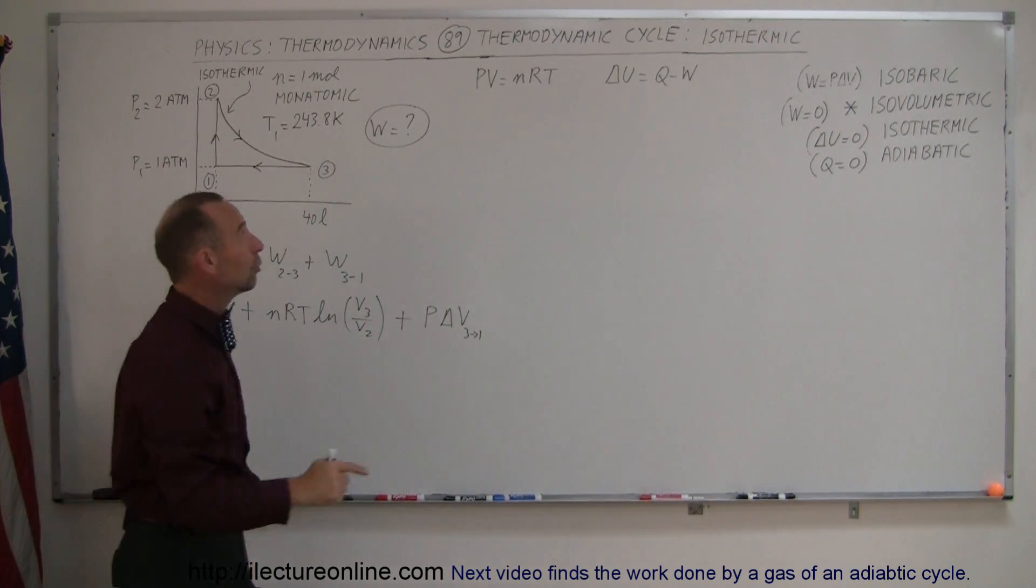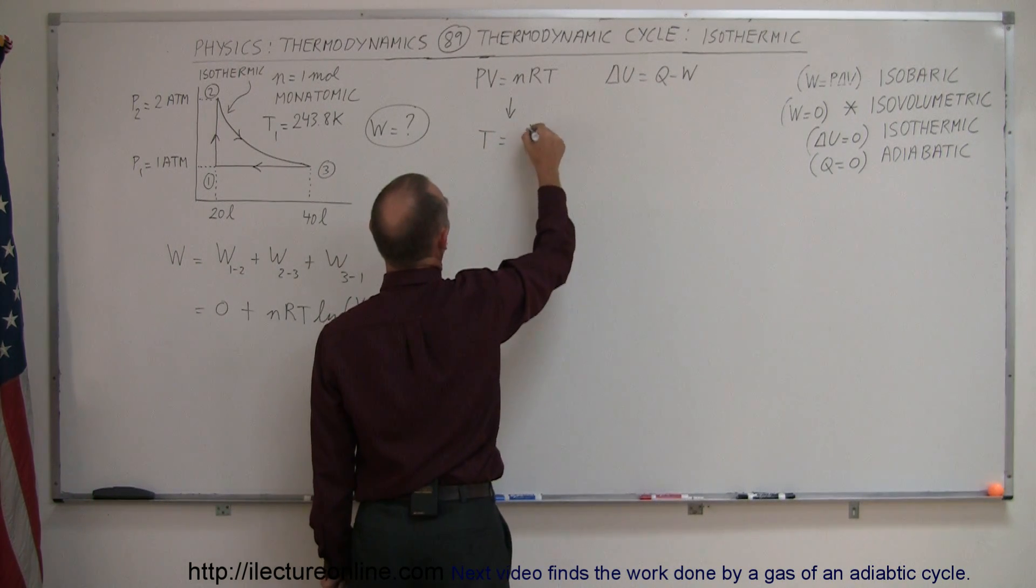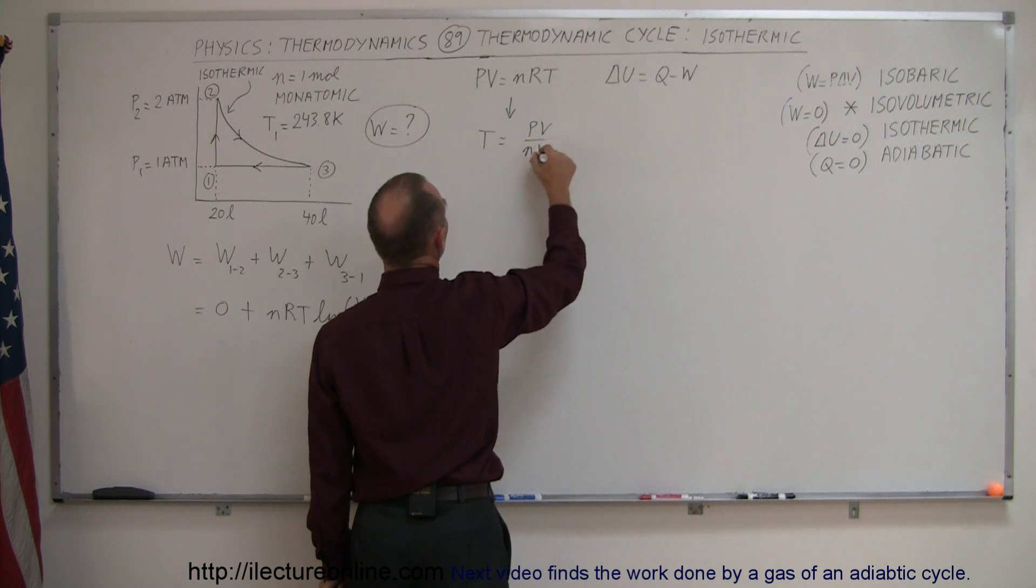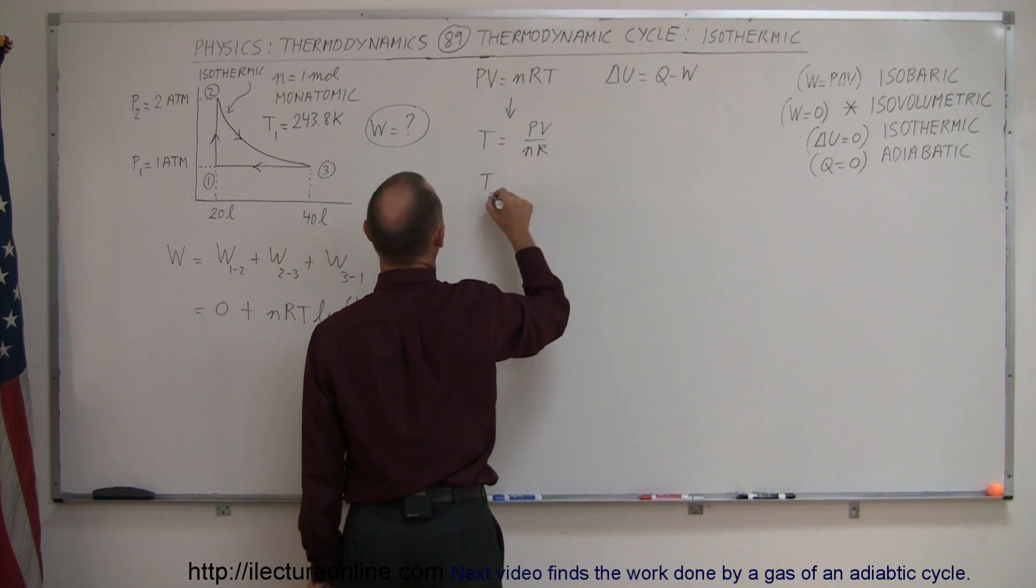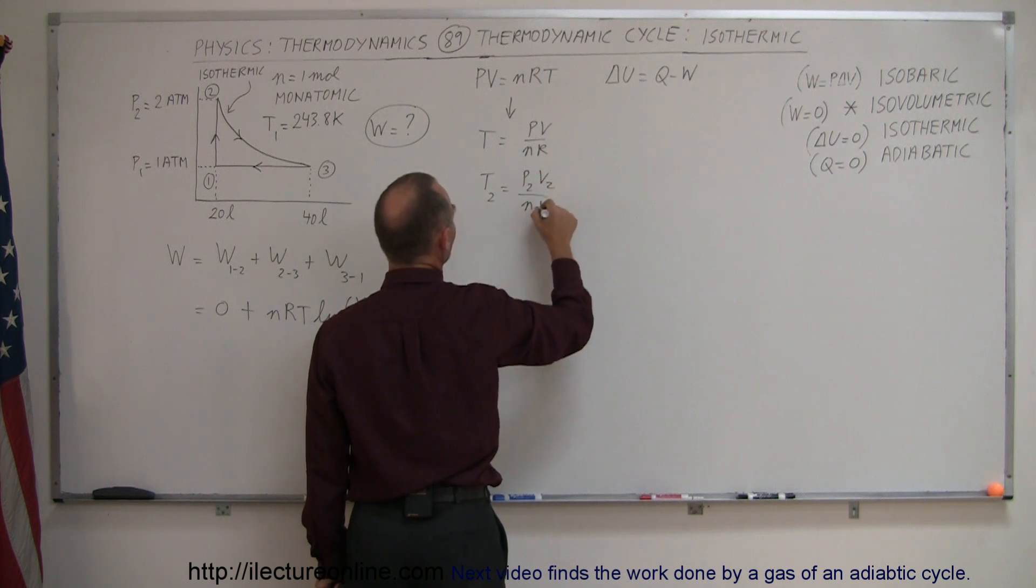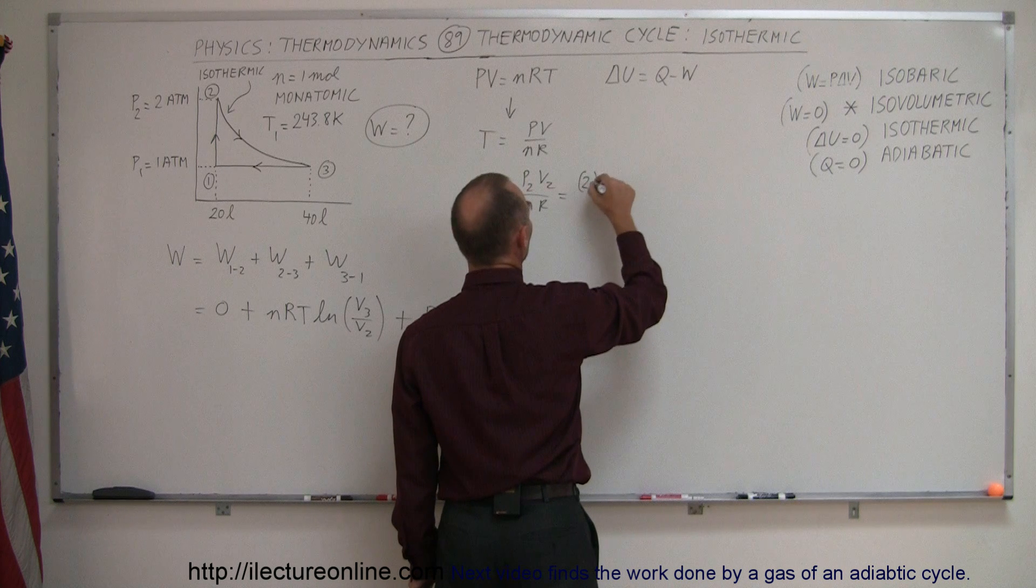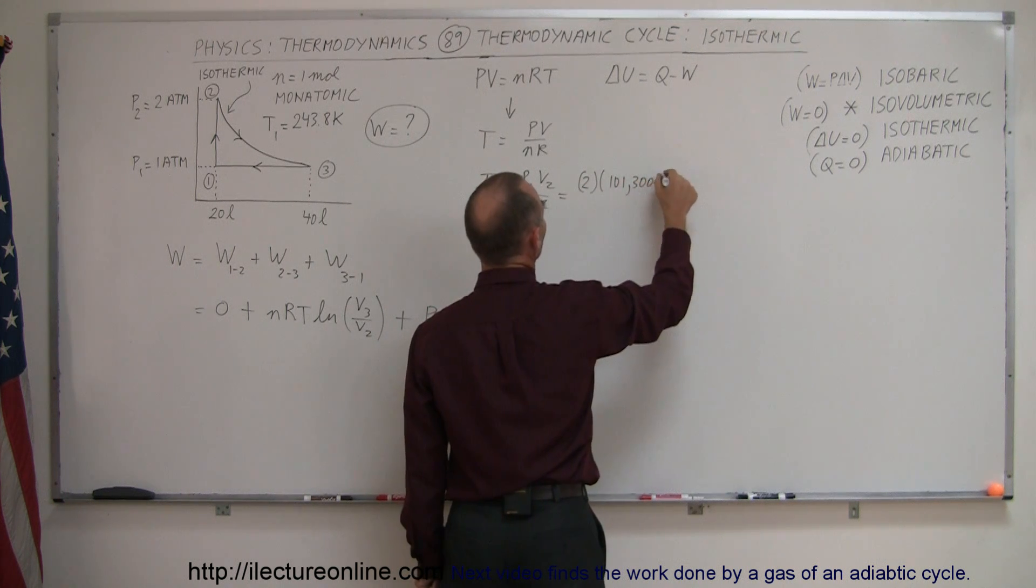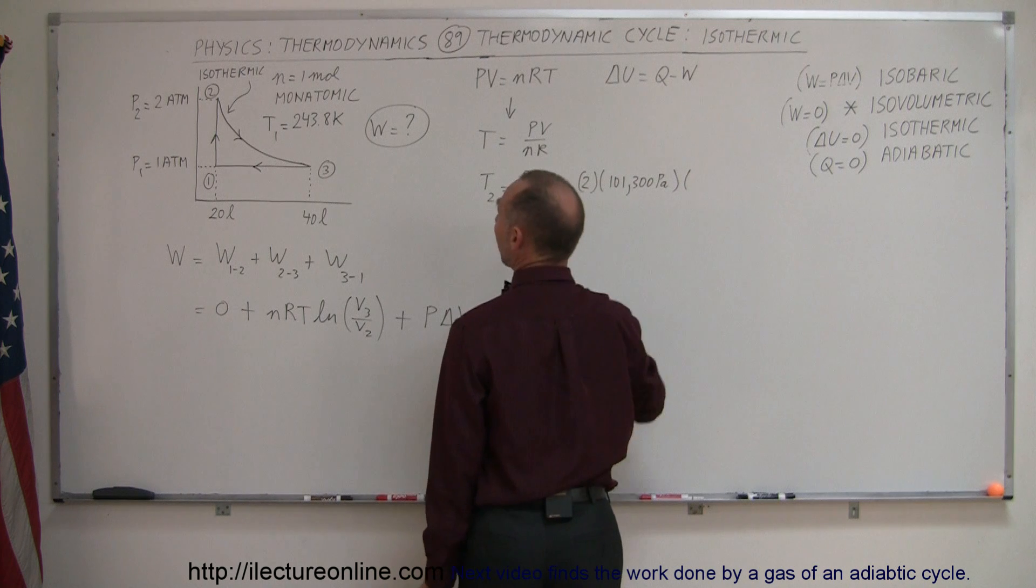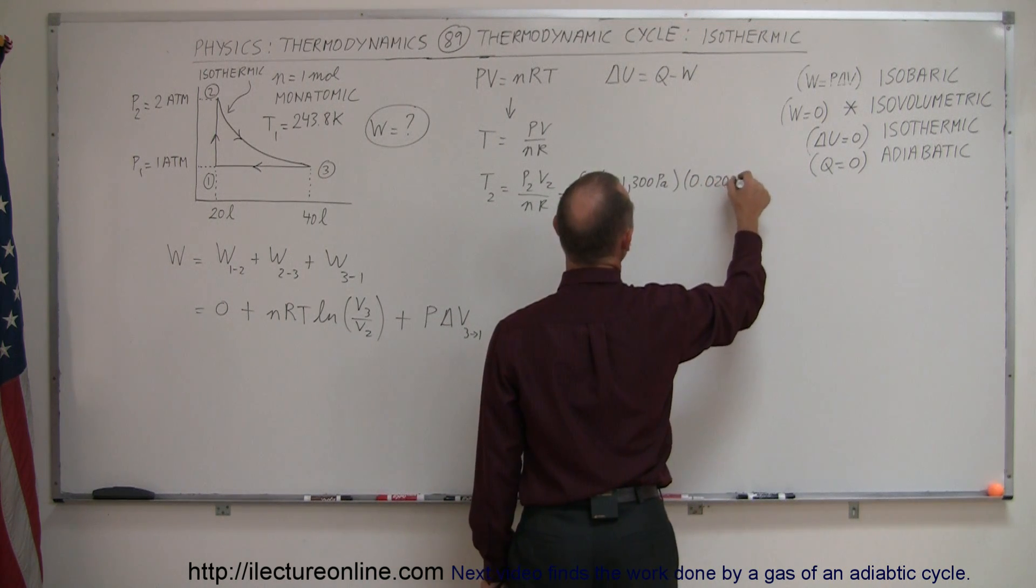So let's go ahead and use our gas equation right there to solve this for temperature. Temperature is equal to PV divided by nR, which means that the temperature at point two is equal to pressure at two, volume of two divided by n times r. So pressure at two is two atmospheres, so that's two times 101,300 pascals, times the volume at two, which is 20 liters, 0.020 cubic meters.